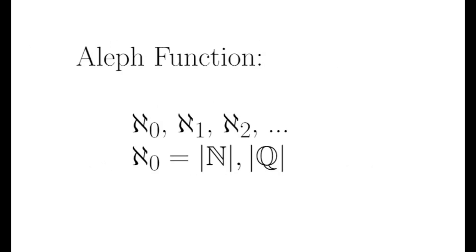Since there are an infinite number of different sizes of infinity, it makes sense for us to order them from smallest onwards. This is basically what the aleph function does. We start with aleph null. Aleph null is the cardinality of a countably infinite set. It is the size of the natural numbers and the rationals.